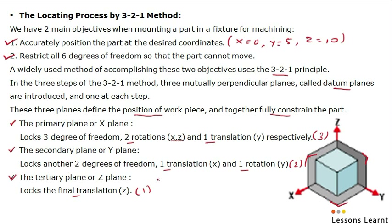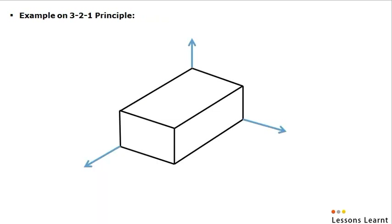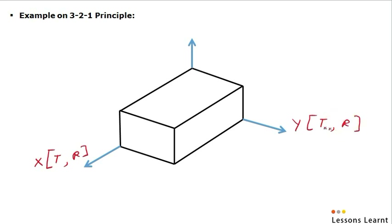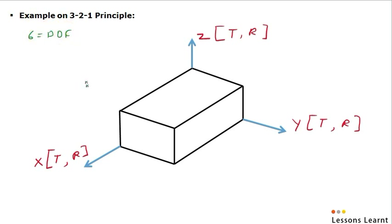How this locking takes place — how we constrain the planes — we are going to see by an example. You can see here a rectangular block in space. This direction we will consider as X — X translation and X rotation. This direction we will consider as Y — translation in Y and rotation in Y. And this one we will consider as Z — translation in Z and rotation in Z. Now, we have to lock the six degrees of freedom of this block using the 3-2-1 principle.